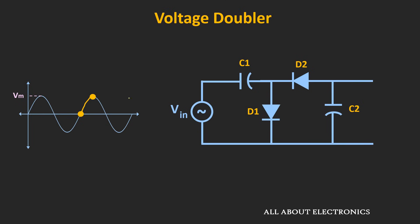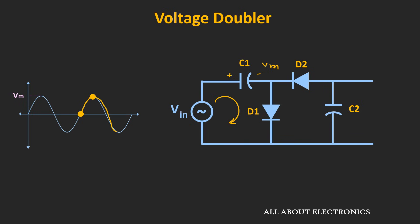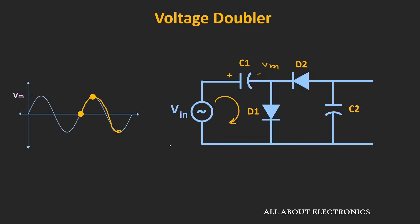Once again, during the next positive half cycle, capacitor C1 starts charging through diode D1 back up to Vm. Then during the next negative half cycle, the charge across capacitor C1 once again transfers to capacitor C2. Over the period of time, the voltage across capacitor C2 increases, and in reality it takes a few more cycles to reach the output of 2Vm.